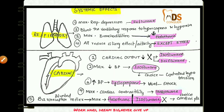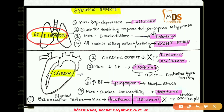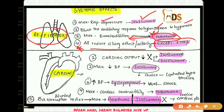Looking at the systemic effects of inhalational agents, starting with respiratory effects: maximum respiratory depression is caused by enflurane. Inhalational agents blunt the response to hypercapnia and hypoxia, and the agent that does this most is halothane. Halothane also produces maximum bronchodilation. All inhalational agents reduce ciliary activity except ether — ether does not reduce ciliary activity.